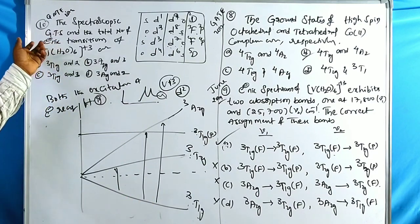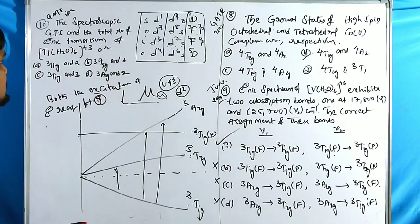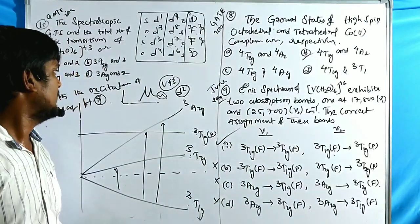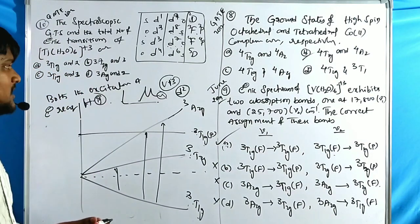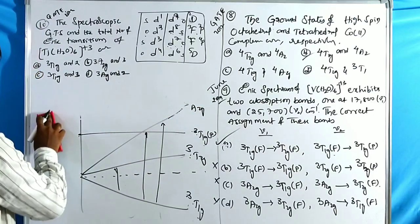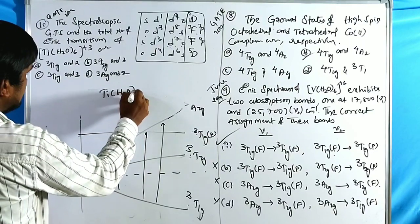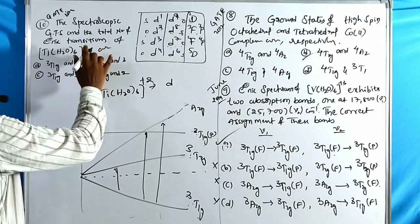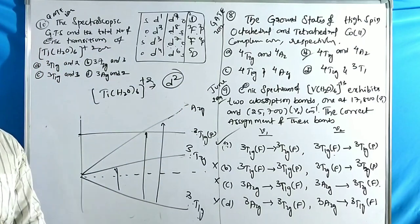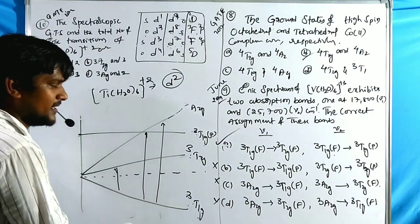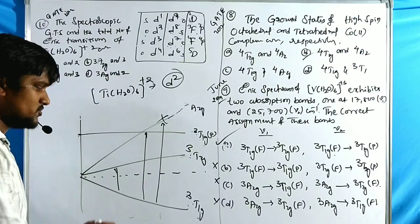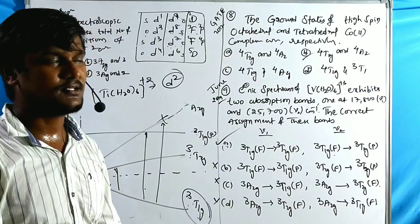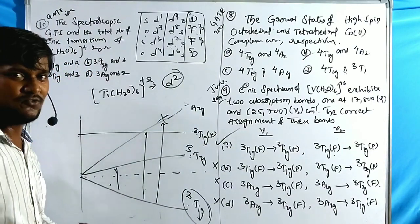Problem 10: Spectroscopic ground term symbol and total number of electronic transitions for Ti(H₂O)₆²⁺ (d2 configuration). Like V³⁺(d2), the ground term is ³T₁g and only two transitions are possible — the transition to ³A₂g is not observed due to high energy requirement. Answer: ³T₁g with two transitions is correct.